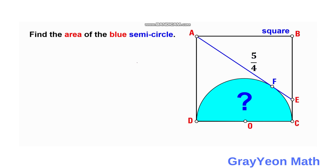Since we are interested in finding the area of the blue semicircle, we can actually find the radius or the diameter of the semicircle. That radius is also the side of the square, so if we find the side of the square, then it is easy to find the area of this semicircle.